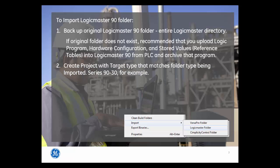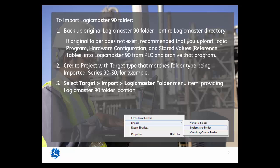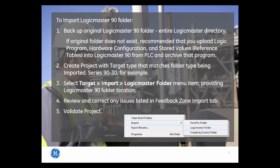Second, create a project with the target type that matches the folder type being imported — Series 9030, for example. Select the Target Import Logic Master Folder menu item, providing the Logic Master 90 folder location. Review and correct any issues listed in the Feedback Zone Import tab. Validate the Machine Edition project.